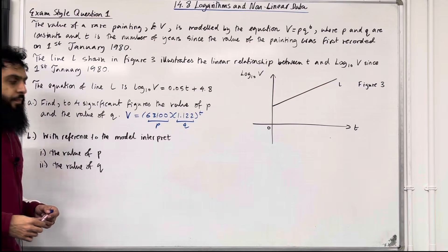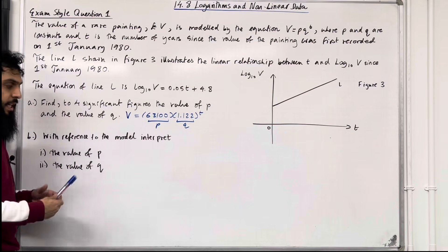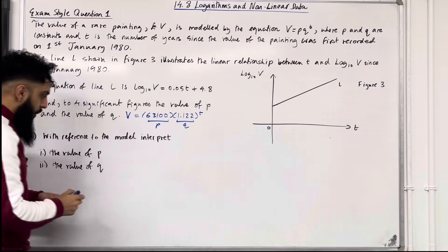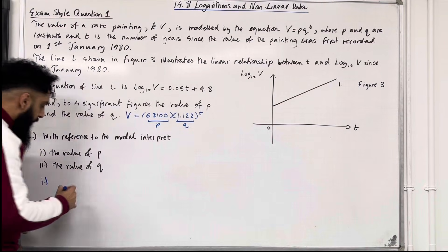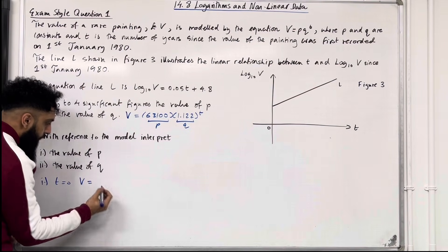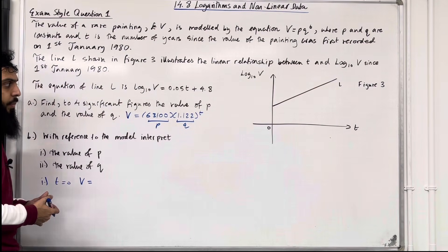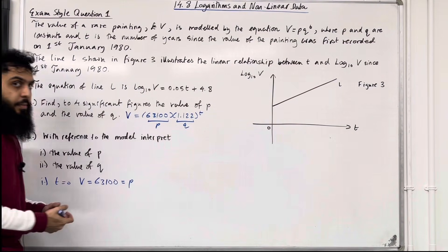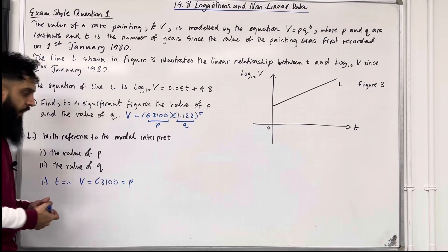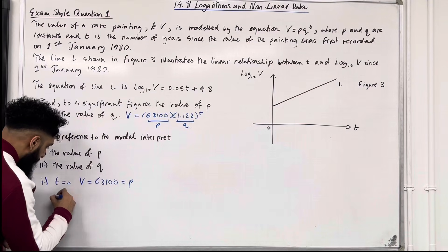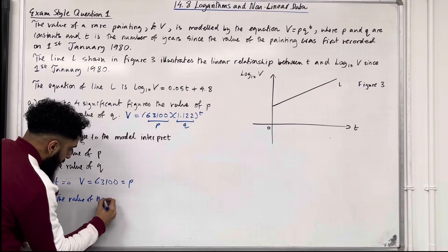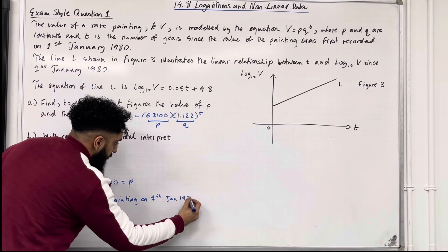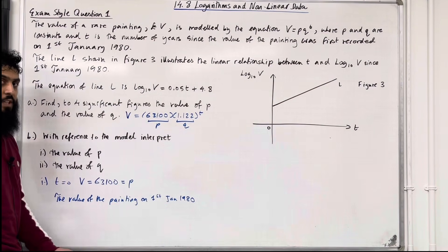Let's move on to part B — interpreting the values of p (63,100) and q (1.122). For p: substituting t equals 0 into the model gives v equals 63,100 times 1.122 to the power 0, which gives 63,100 — precisely the p value. The interpretation for p is the value of the painting on 1st January 1980, or the initial value of the painting.